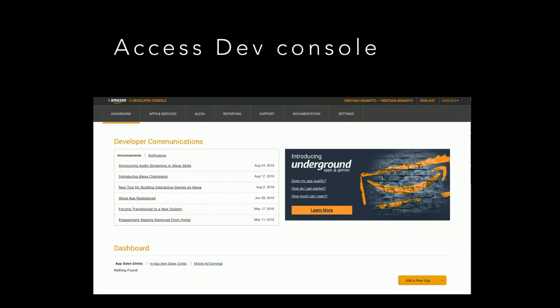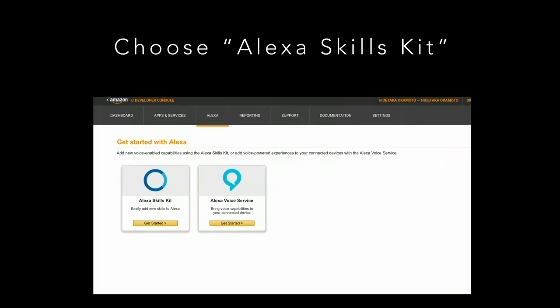If you finish creating the AWS script, set it up in the Alexa console. Access the Amazon Developer Console, go to the Alexa tab, and you should click to create. You can see two types of applications, and if you want an Alexa application like AmimotoNinja, you should click 'Alexa Skill Kit.'